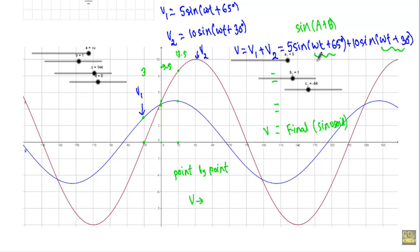To avoid this kind of lengthy trigonometric operation or point-by-point addition of instantaneous values, we introduce a system of complex numbers which, when related to AC waveforms, results in a technique for finding the algebraic sum of sinusoidal waveforms. This is a very quick, direct, and accurate method known as phasor algebra.